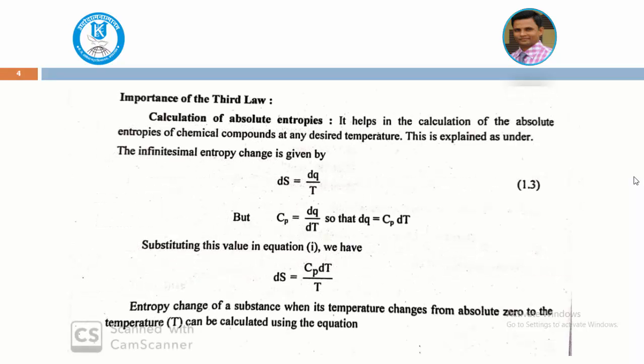Now, what is the importance of the third law of thermodynamics? The very basic importance is the calculation of absolute entropy. Whenever you want to calculate the absolute entropy, you have to use the third law of thermodynamics. It helps in the calculation of the absolute entropies of chemical compounds at any desired temperature. A small infinitesimal entropy change can be expressed, and we know that entropy change is given by dq upon T.